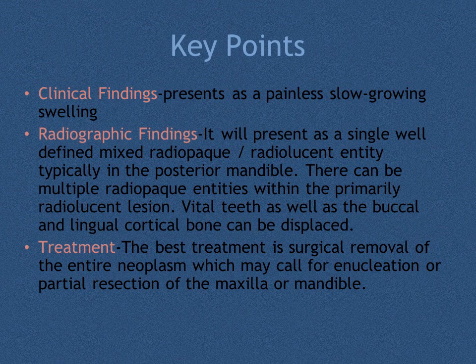Key points: The ameloblastic fibroodontoma presents as a painless, slow-growing swelling, usually accompanied by unerupted as well as displaced vital teeth. Radiographically, it presents as a single, well-defined, mixed radiopaque-radiolucent entity, typically in the posterior mandible. There can be multiple radiopaque entities within the primary radiolucent lesion, and vital teeth as well as the buccal and lingual cortical bone can be displaced.